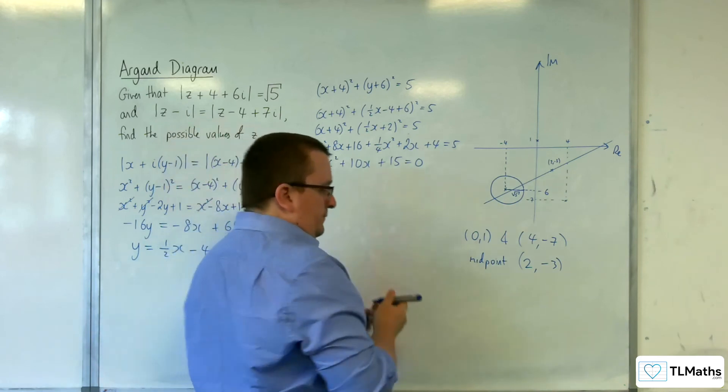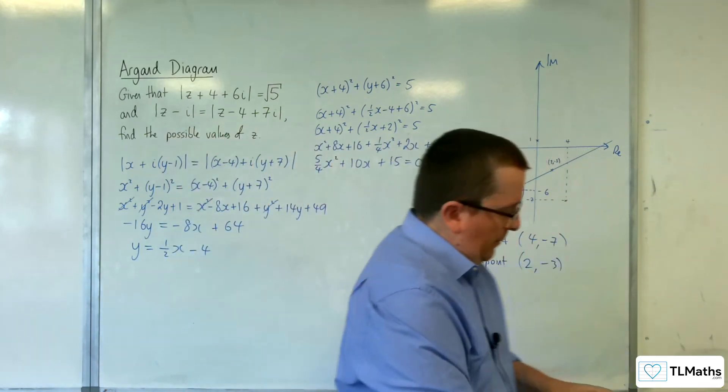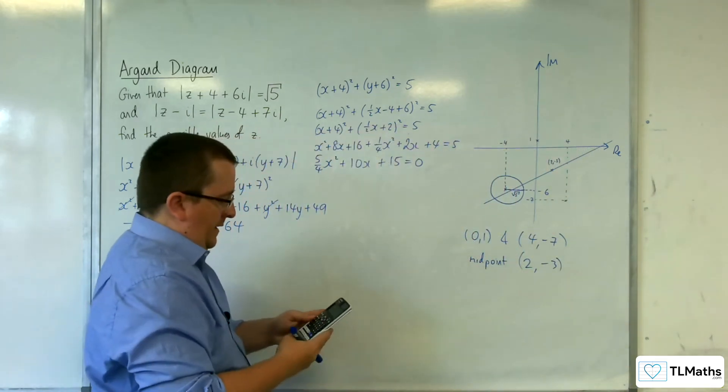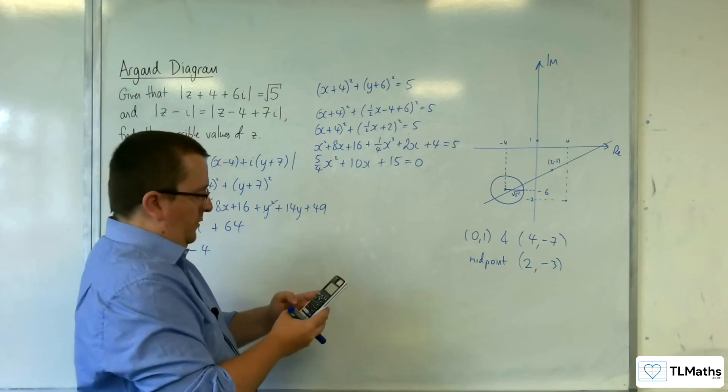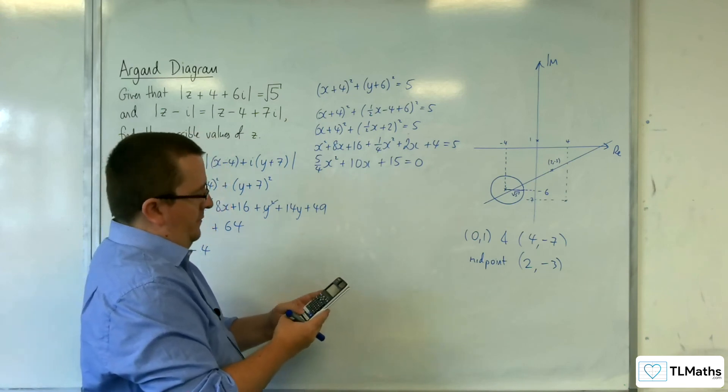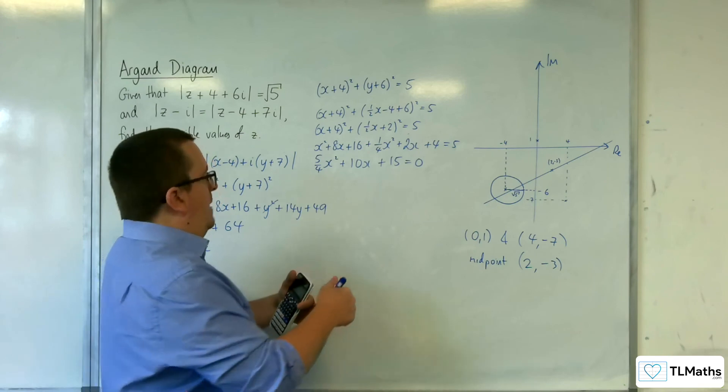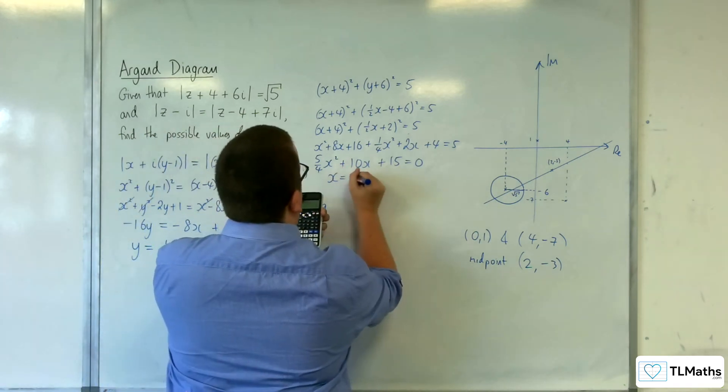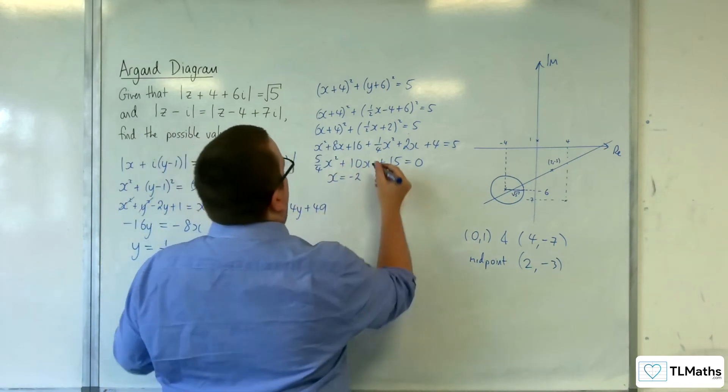So from here, I should be able to solve that equation on my calculator. So we've got the 5 quarters, 10 and 15. So we get minus 2 and minus 6.